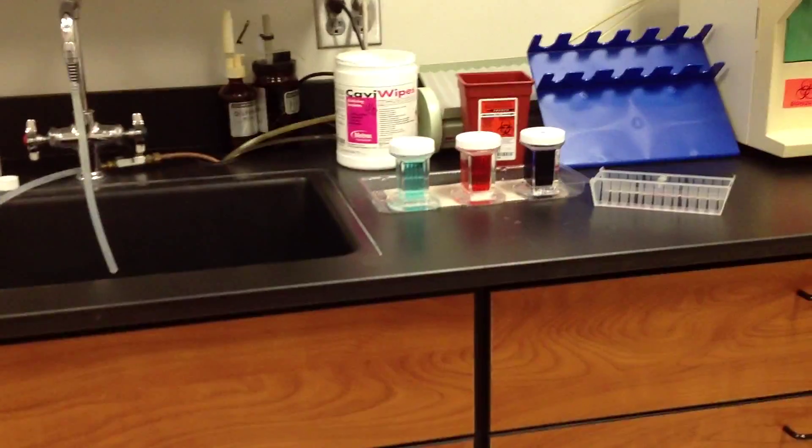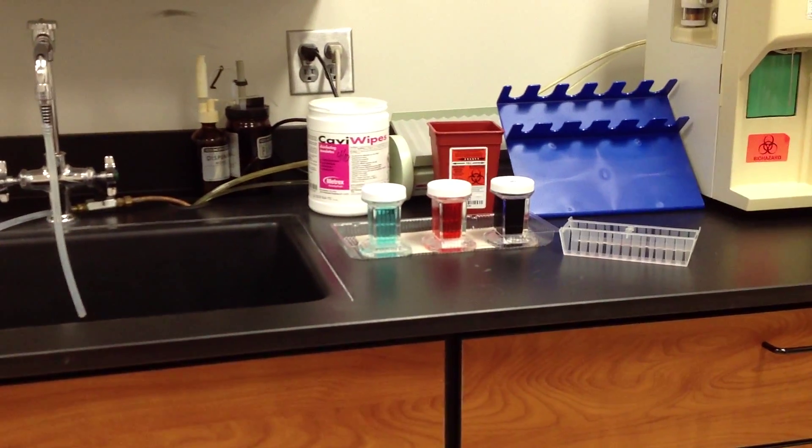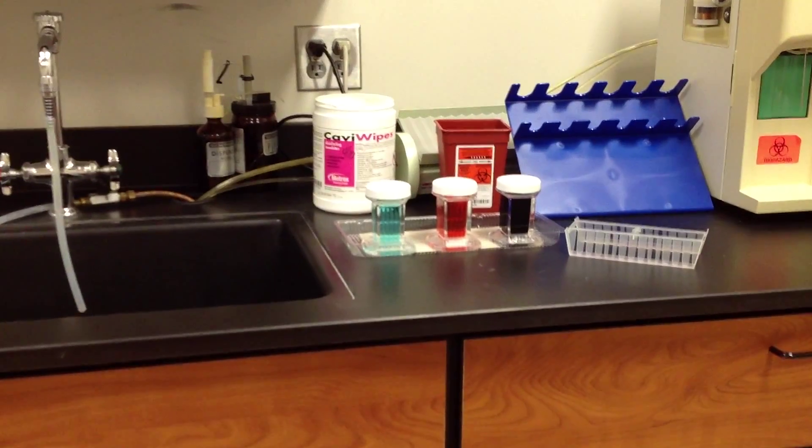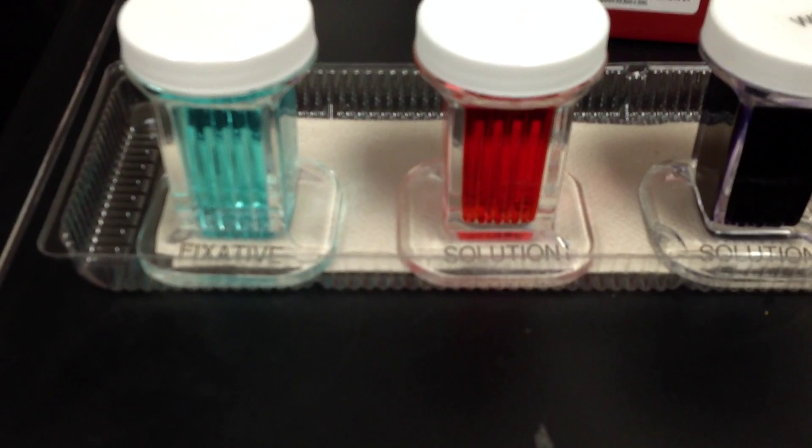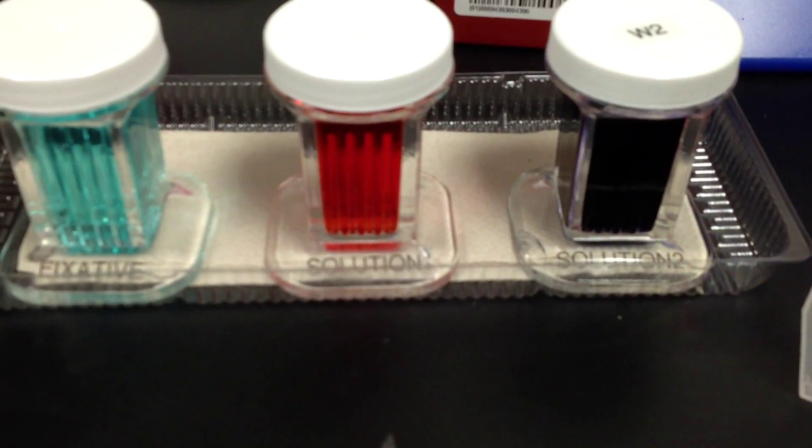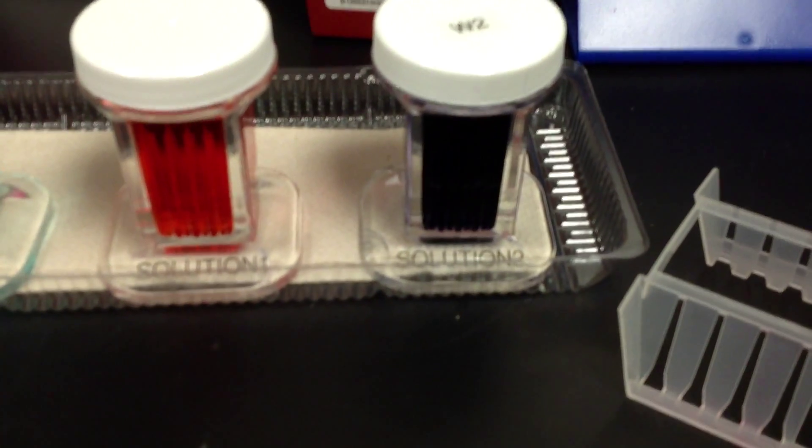We're going to perform a Wright stain on our dried peripheral smears. It consists of three solutions: a fixative, first stain, and second stain.